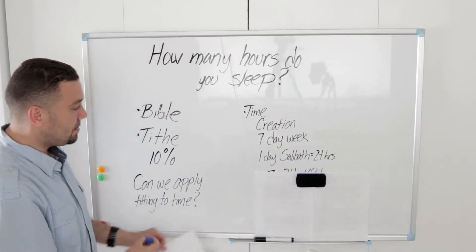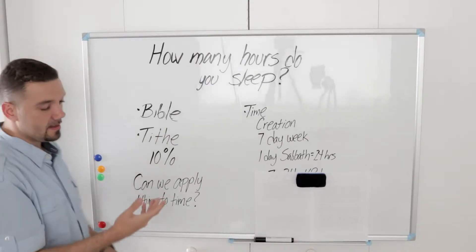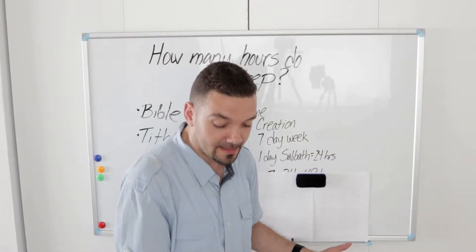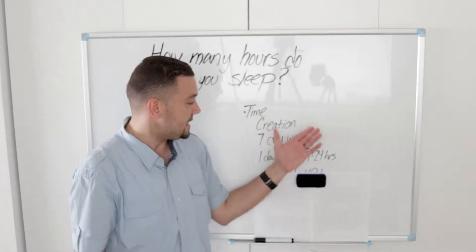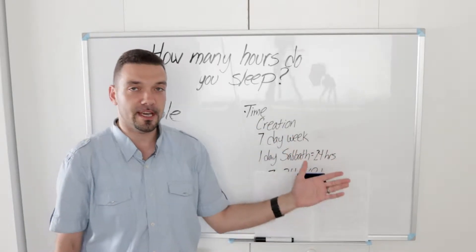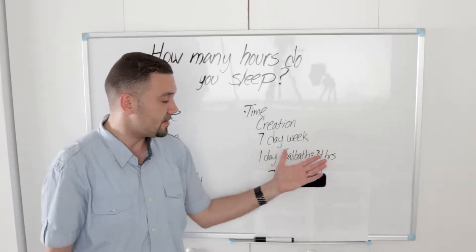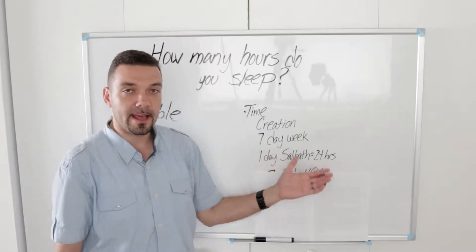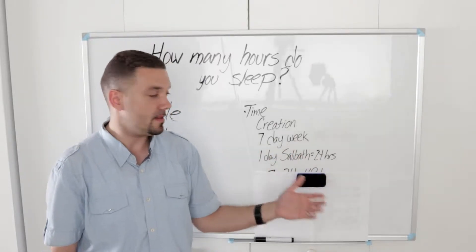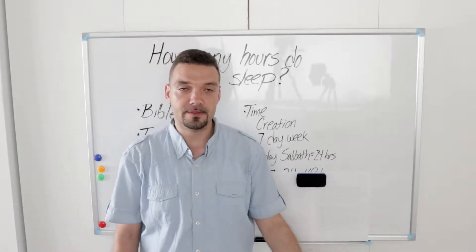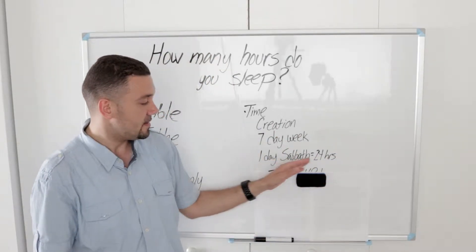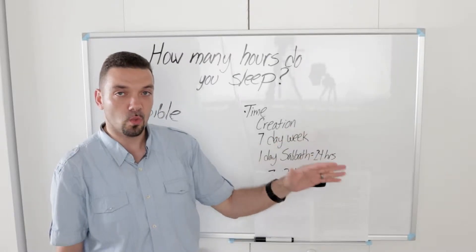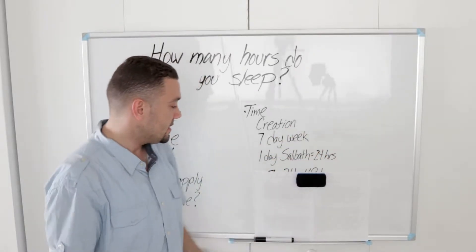When we look at time in the Bible, in Genesis they talk about creation, which is seven days, a week. Then they talk about this one day of rest, which is Sabbath, the Saturday. That's 24 hours. If we rest 24 hours, that is one day rest.